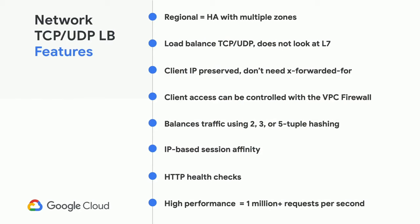In terms of how it load balances traffic, it can use a 2-, 3-, or 5-tuple hashing mechanism. With a 5-tuple: source IP, destination IP, source port, destination port, and protocol. A 3-tuple is source IP, destination IP, and protocol. A 2-tuple is just source IP and destination IP. It also maintains session affinity based on IP address. It supports HTTP health checks for backends. These are very high-performance, highly scalable devices — they can handle a million-plus requests per second.